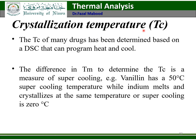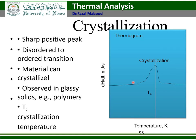Crystallization temperature (Tc) of many drugs has been determined using DSC. The difference between Tm and Tc is a measure of supercooling. For example, vinylidene has 50°C of supercooling while indium melts and crystallizes at the same temperature — supercooling is zero.